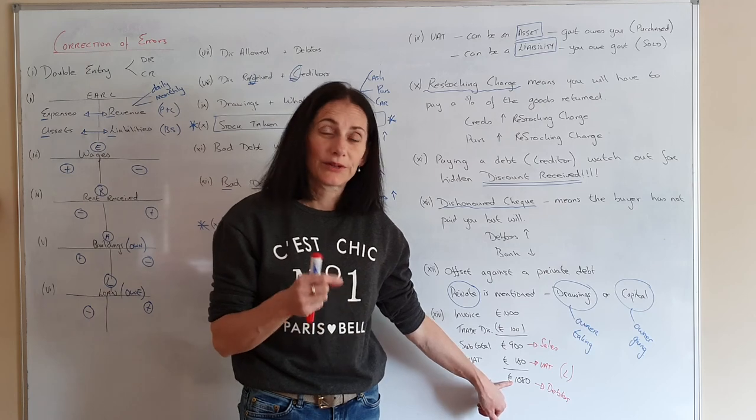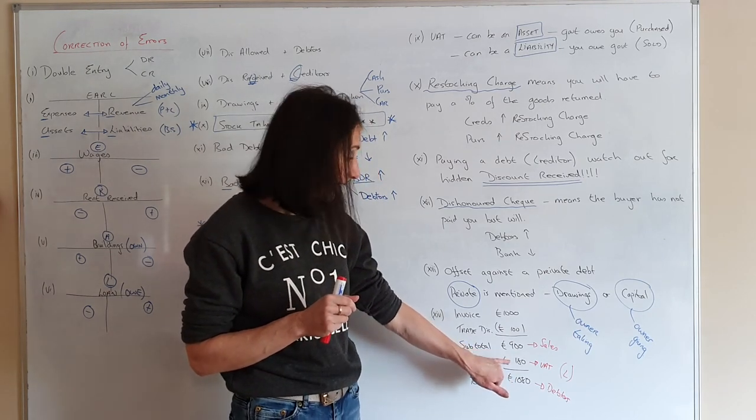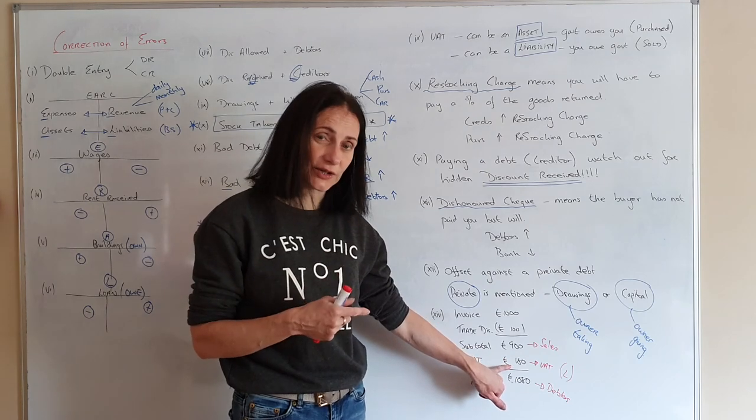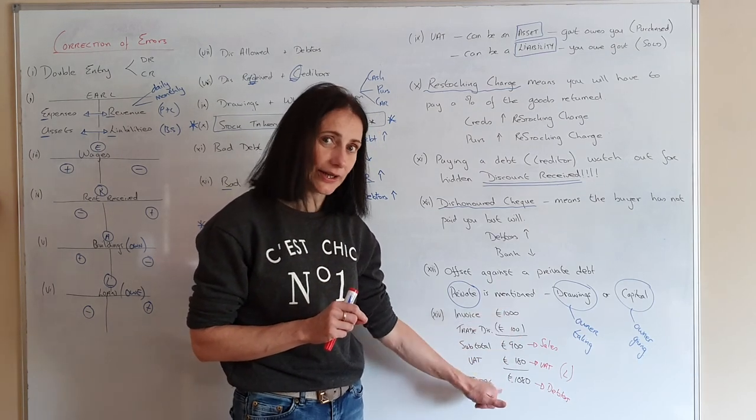So let's just go through this. The debtors will give me 1080. Do you get to keep that 1080? No. You only get to keep 900. Because now you owe or you've collected 180 euro for the government. So just make sure you take that down correctly and understand.